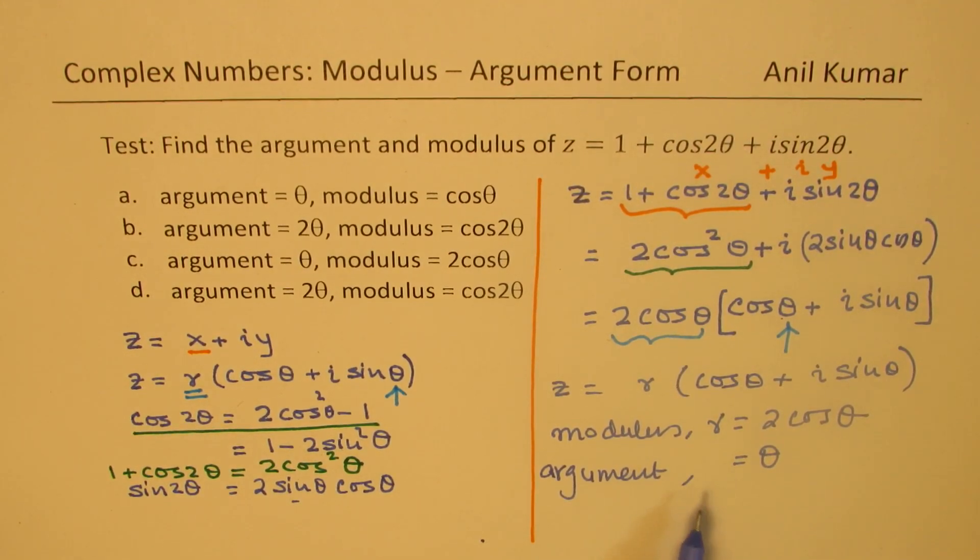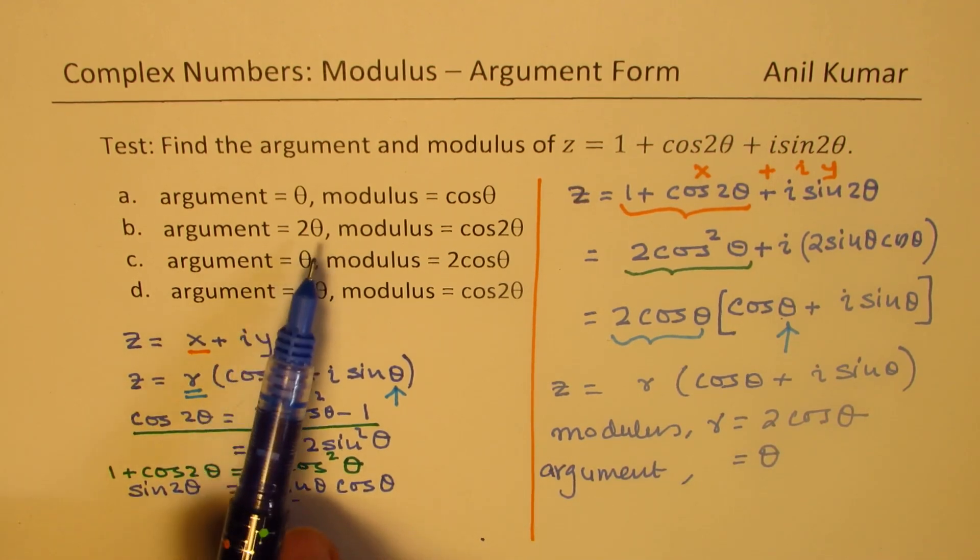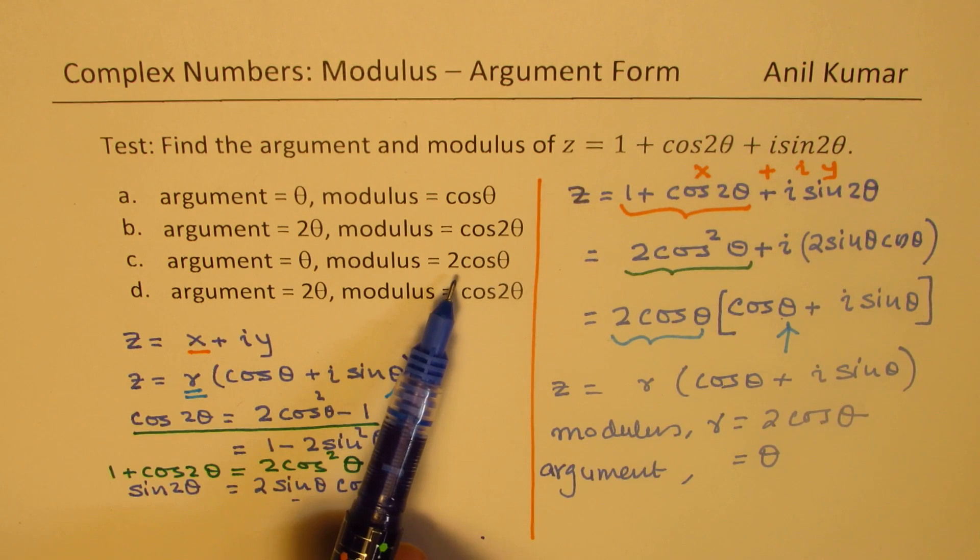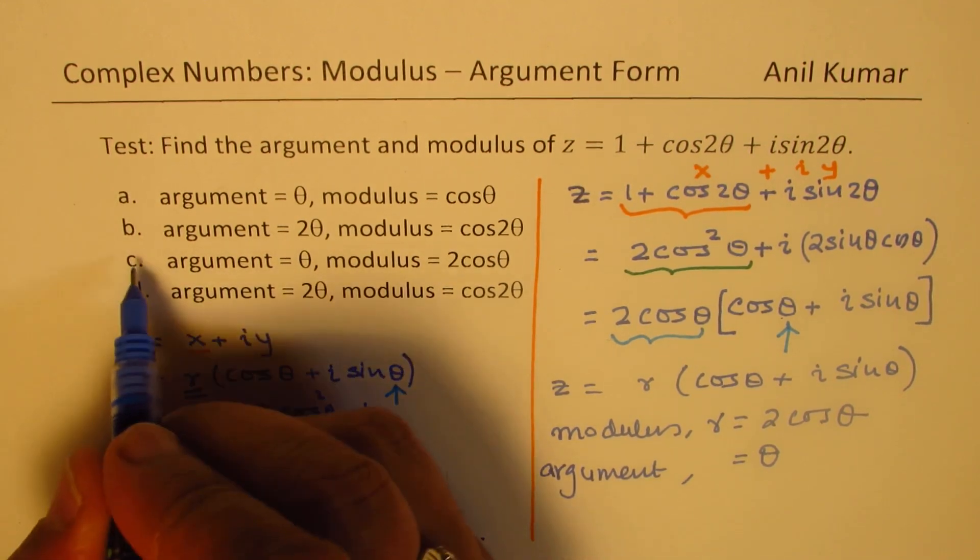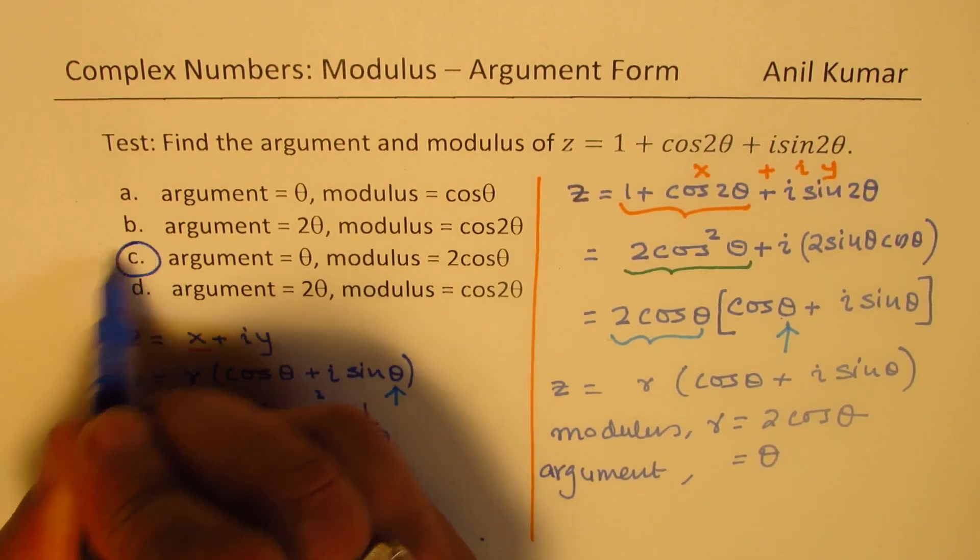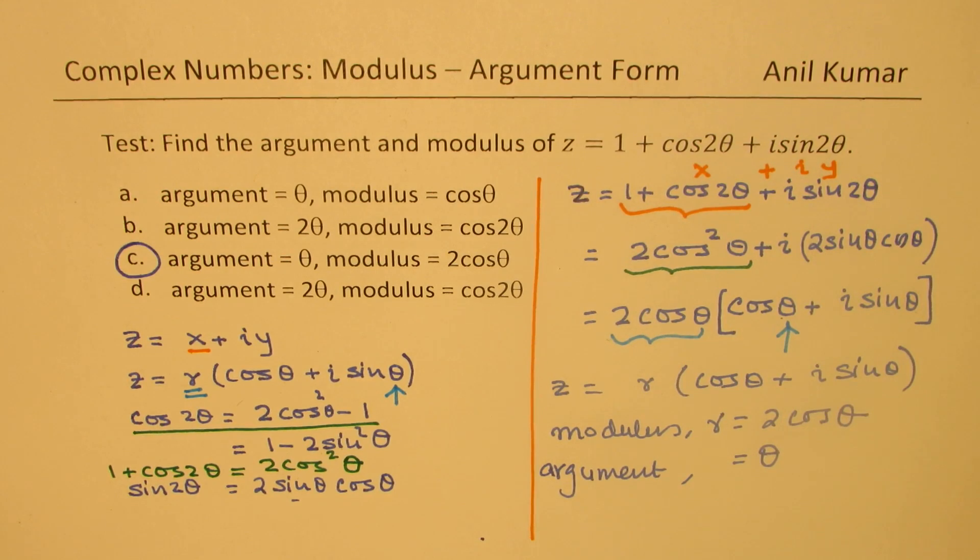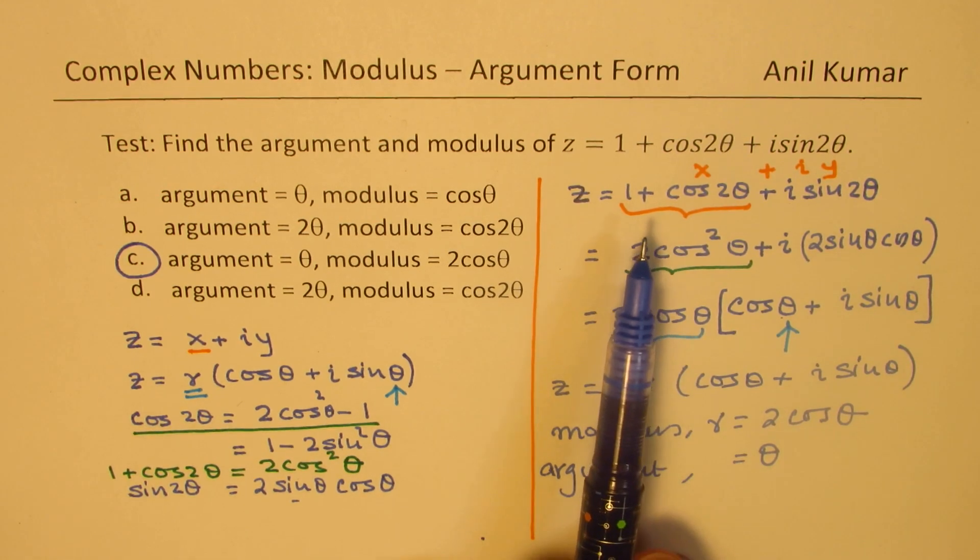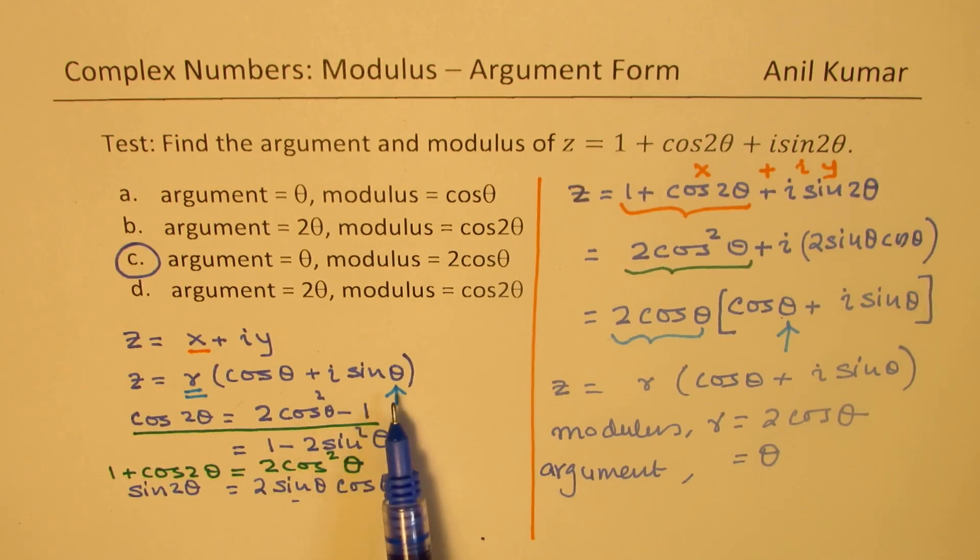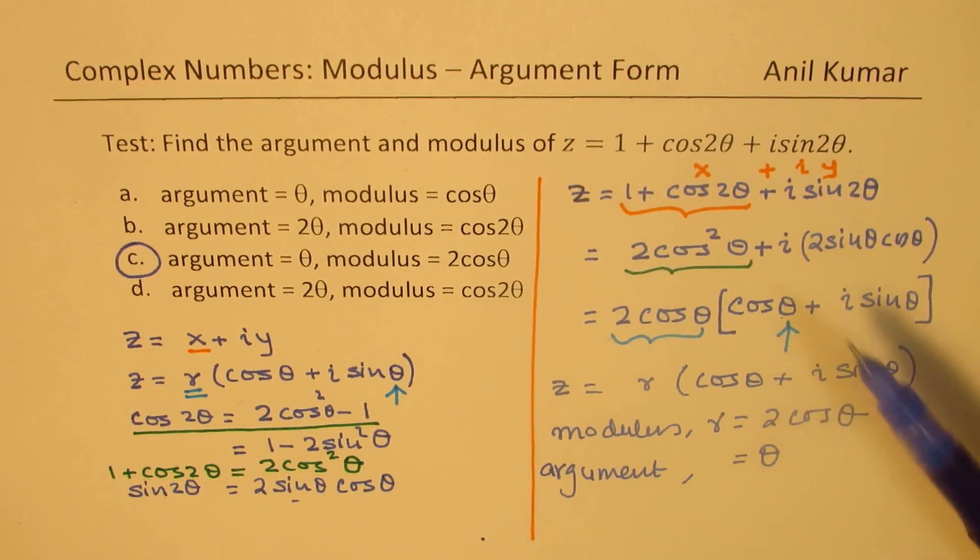And amongst the choices given to you, r is 2 cos theta, and argument of theta is option c. Is that clear to you? That is how you are going to answer. So, I hope the steps are absolutely clear. Now, there are different ways of doing it. We could have found the modulus and this argument in some other way also. However, this is the most efficient way of doing it.